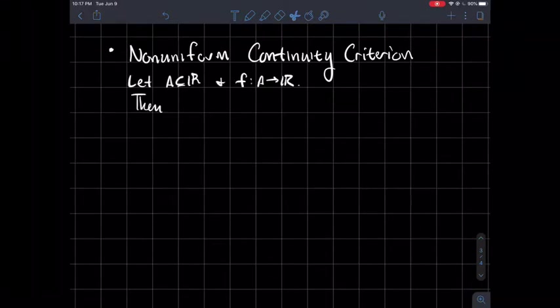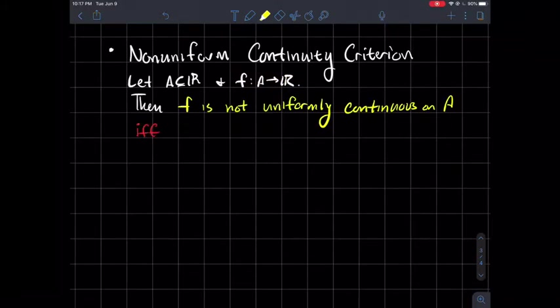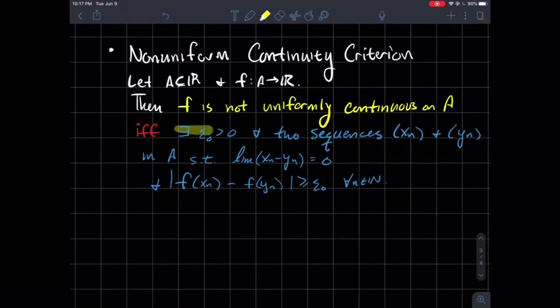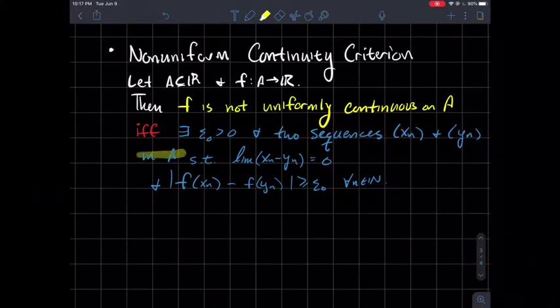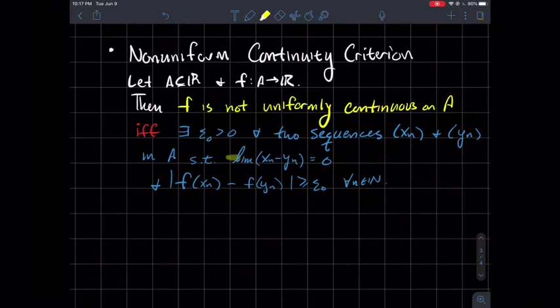Let me tell you what's a way to check that a function is not uniformly continuous. So usual setup, if you've got some subset A of the real numbers and a function whose domain is that A, then f is not uniformly continuous on A if and only if there exists some positive number epsilon_0 and there are two sequences, x_n and y_n, that are from your domain A.